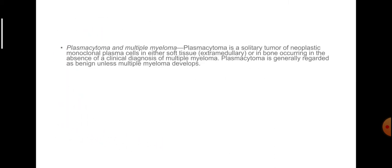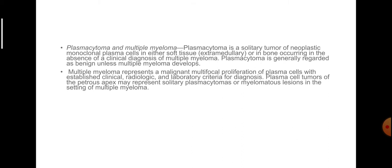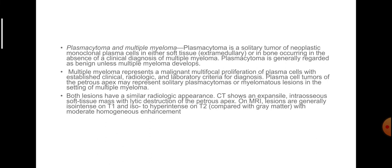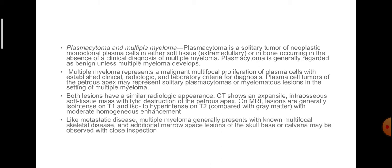Plasmacytoma and multiple myeloma: Plasmacytoma is a solitary tumor of neoplastic monoclonal plasma cells in either soft tissue or bone, occurring in the absence of a clinical diagnosis of multiple myeloma, and is generally regarded as benign unless multiple myeloma develops. Multiple myeloma represents a malignant multifocal proliferation of plasma cells. Plasma cell tumors of the petrous apex may represent solitary plasmacytomas or myelomatous lesions. CT shows an expansile intraosseous soft tissue mass with lytic destruction. On MRI, lesions are generally isointense on T1 and iso- to hyperintense on T2 compared with grey matter, with moderate homogeneous enhancement. Multiple myeloma generally presents with known multifocal skeletal disease.